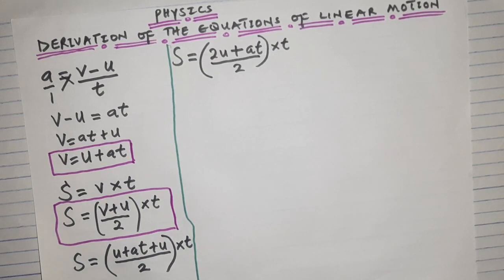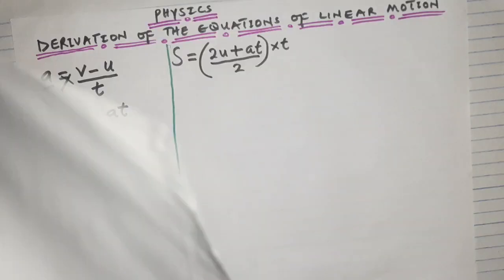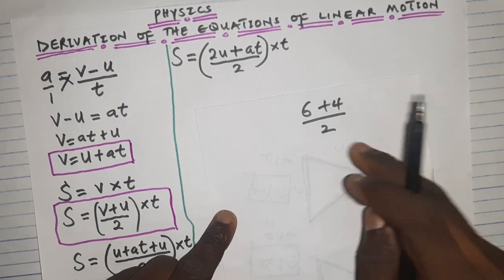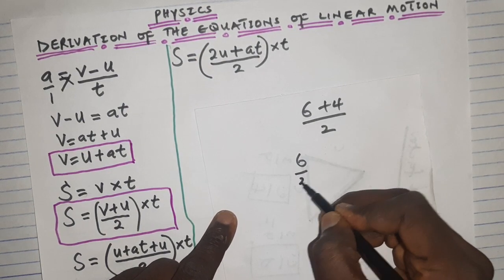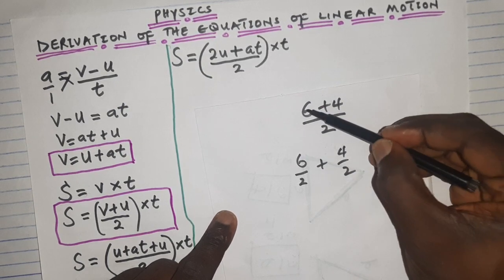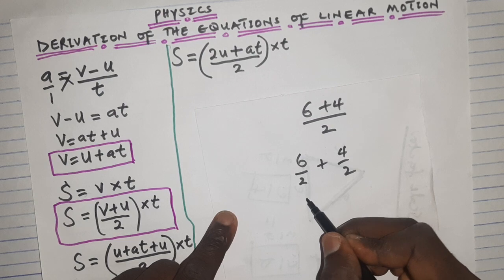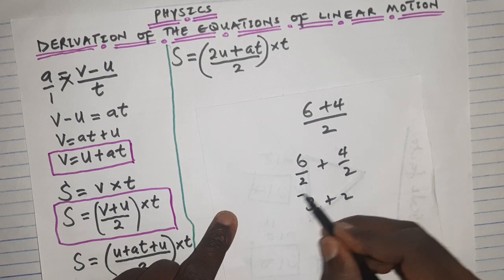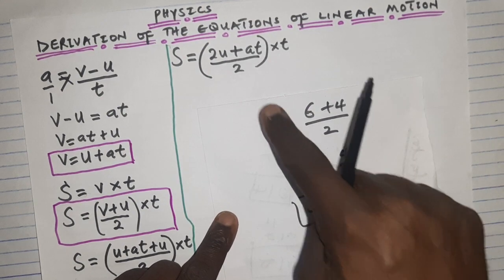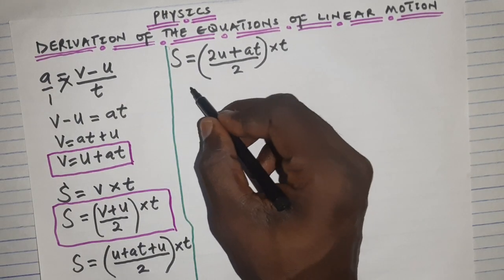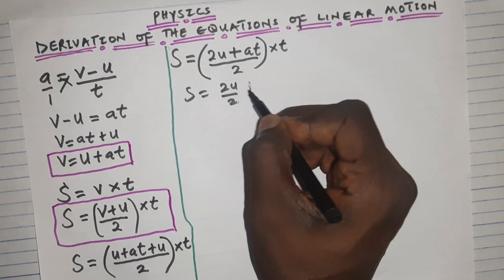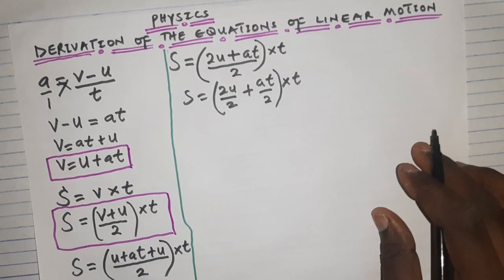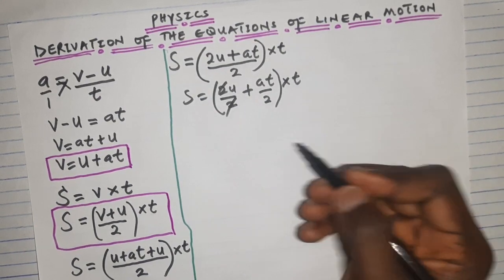We can split the fraction: just as (6 + 4) / 2 = 6/2 + 4/2, we apply the same logic here. So (2u + at) / 2 = 2u/2 + at/2 = u + at/2. Therefore s = (u + at/2) × t.